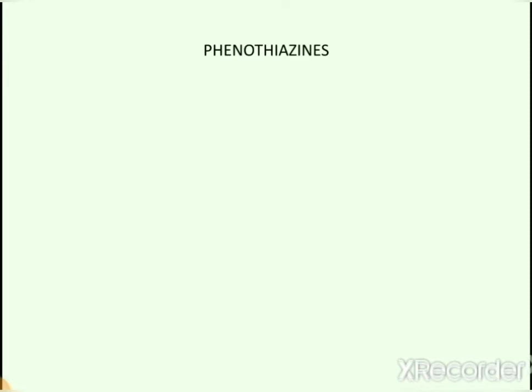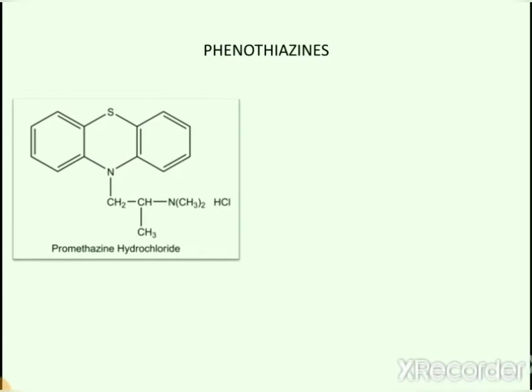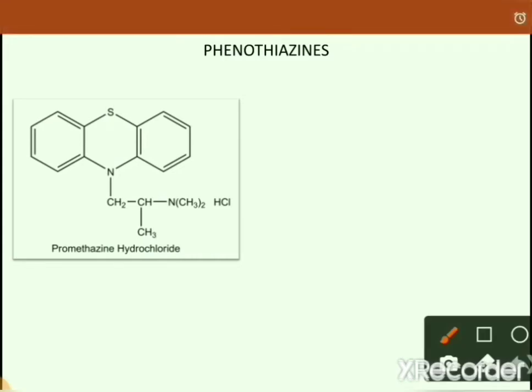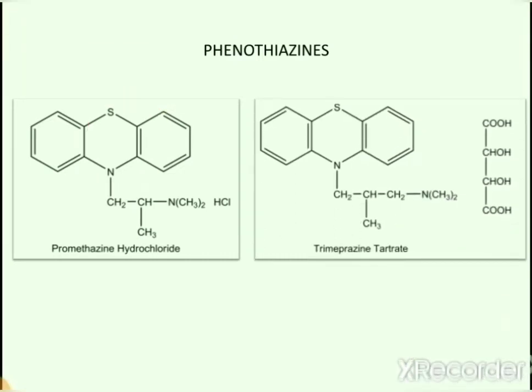The next subcategory of H1 antihistaminics is phenothiazines. The first drug of this category is promethazine hydrochloride. In this structure, the mid portion of the ring represents the phenothiazine ring. The second drug of this category is trimeprazine tartrate.